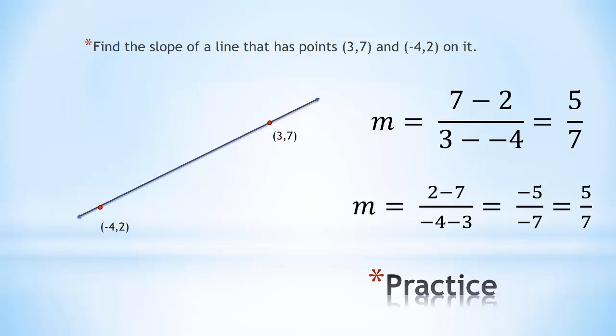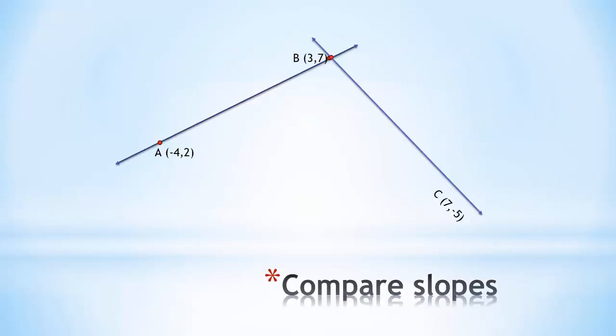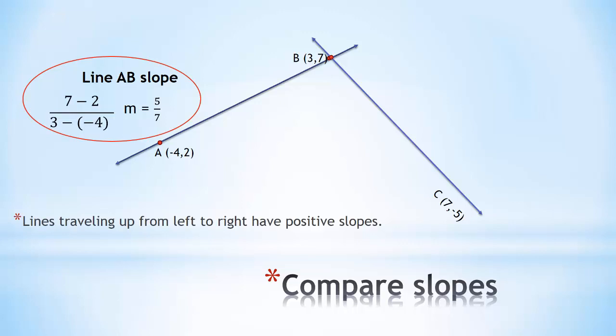Now we're going to compare our slopes. Let's first find the slope of line AB here on the left. Calculating my slope, I get 5/7. You'll notice that that line, as we look from left to right, is going up. All lines traveling up from left to right have positive slopes, just like line AB has a positive 5/7.